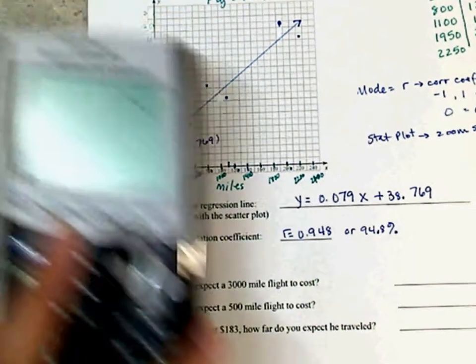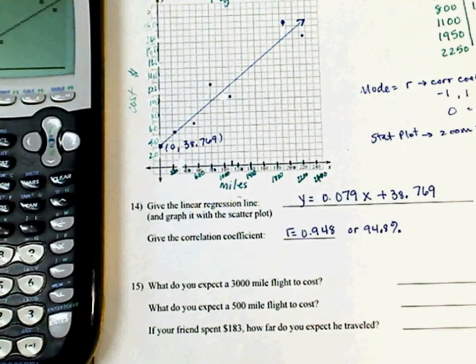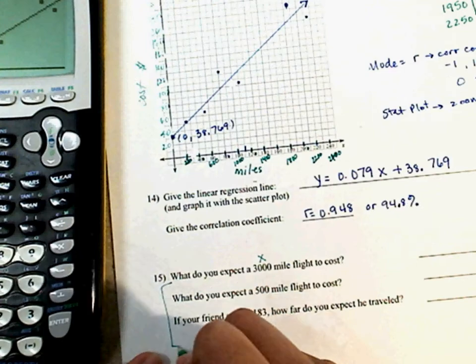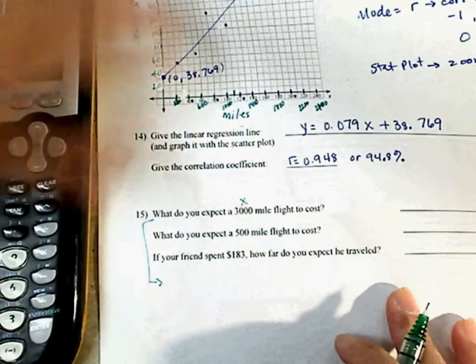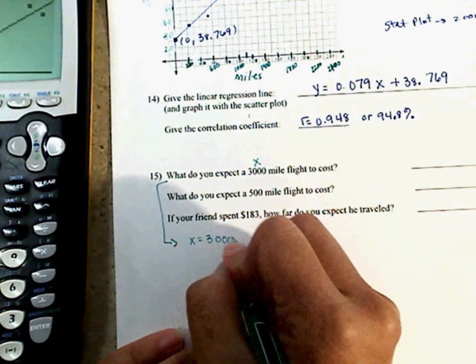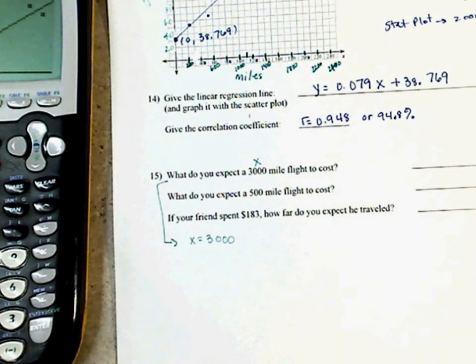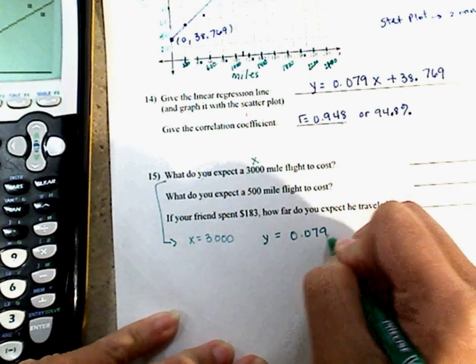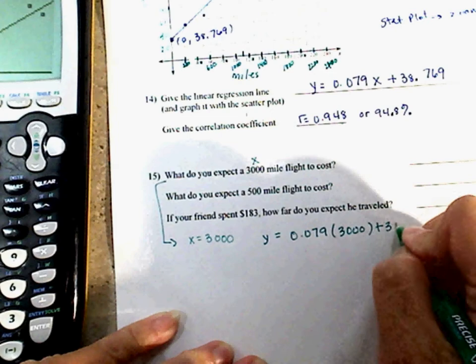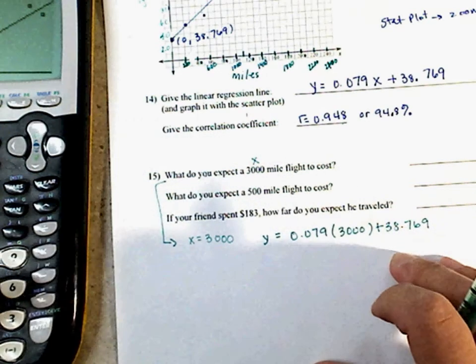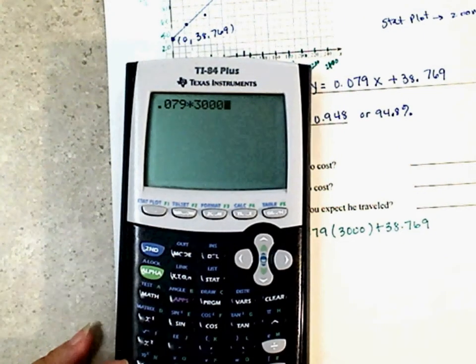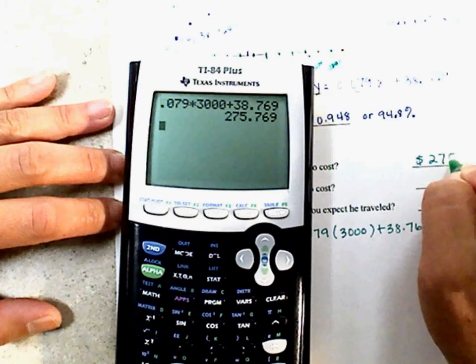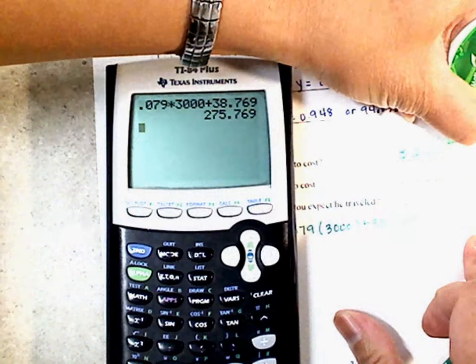Now it says, what do you expect a 3,000-mile flight to cost? There's many different ways you can do it. But I do want to show you, if you hit zoom, scroll down to 9, or zoom 9, those are all the points that you have plotted. If you hit trace, 225, 55.6. That point is 525 to 67.7. See how you can kind of check your graph? Those are all your points. This is your best line to fit. Now, I want to see where it is at zero. If you hit second table, your zero is at 38.769. That kind of gives me an idea how to graph my line.